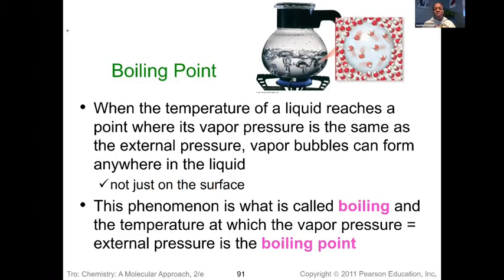Just remember that when the temperature of a liquid reaches the point where the vapor pressure is equal to the external pressure, that's when you start seeing bubbling occurring — not just on the surface but sometimes at the bottom of a kettle or whatever you're using. That process is known as boiling, and it occurs when your vapor pressure equals the external pressure.